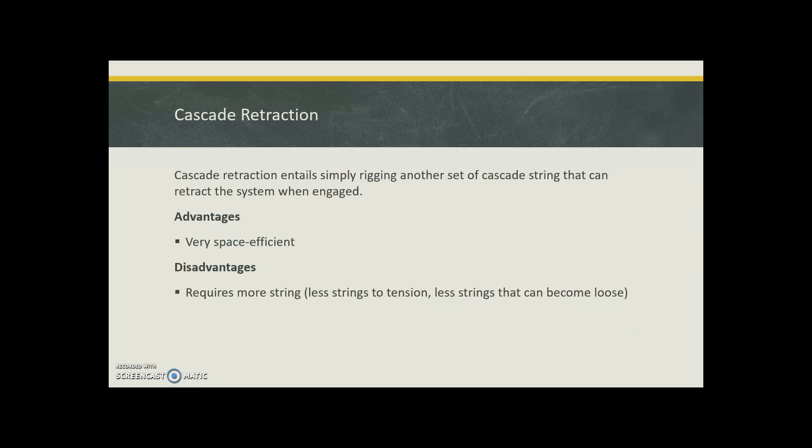Cascade retraction entails simply rigging another set of cascades that can retract. The system when engaged is very space efficient but requires way more string.